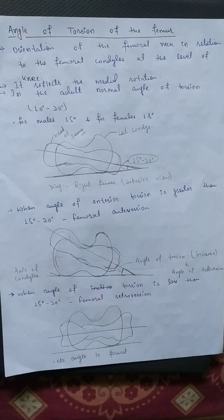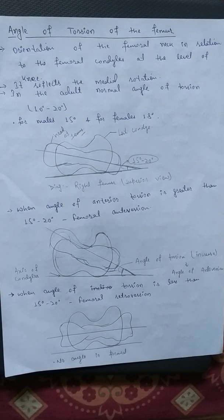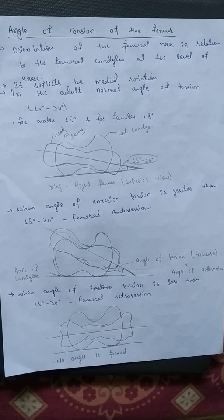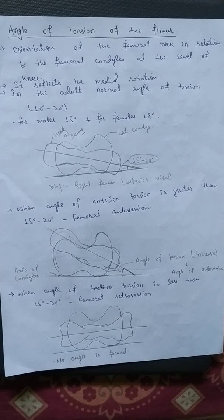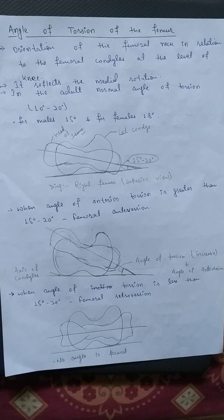Hey everyone, I am Shubham Kumari and in this video I am going to discuss the angle of torsion of the femur. There are three angles formed in the femur: first is the angle of inclination, second is the angle of torsion, and the third is the angle of Wiberg, which is also known as the center-edge angle. So let's start with the angle of torsion.